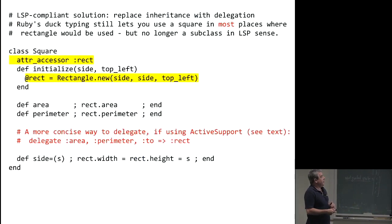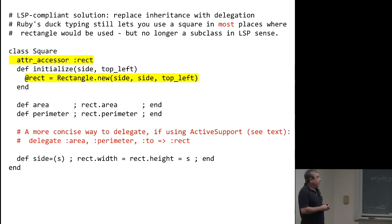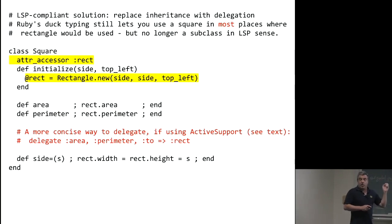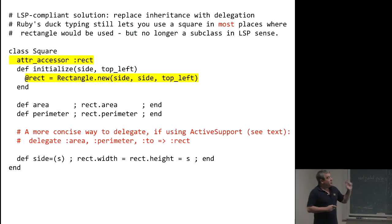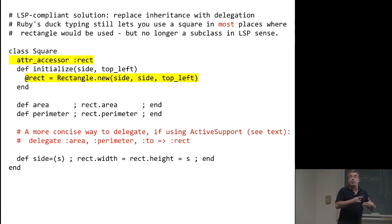Here's what that looks like in code. Here's class square, which no longer has any direct connection to the rectangle class. When we create a new square — all we specify is the length of a side — we create a rectangle instance inside of square with the correct dimensions. When you ask the square for its area or perimeter, all we're doing is passing those calls on — delegating them to the instance of rectangle. Now square is no longer obligated to do something sensible when you say make tall and skinny, because it's not a subclass of rectangle. It is no longer assumed that you can pass a square anywhere a rectangle is expected. You can still use a square in many places a rectangle would be expected, but you're no longer asserting they have to be substitutable in the Liskov sense.